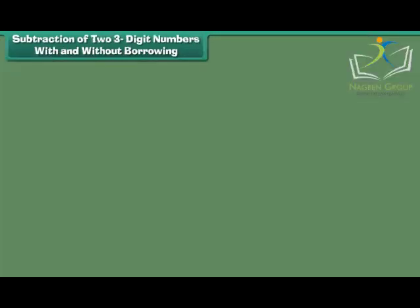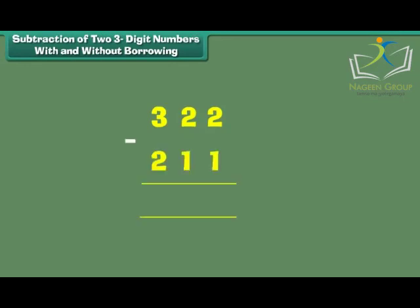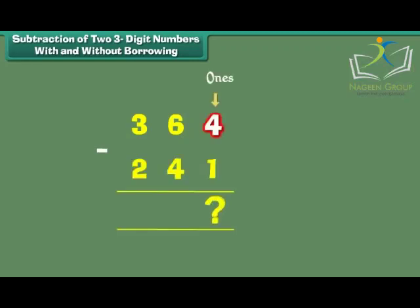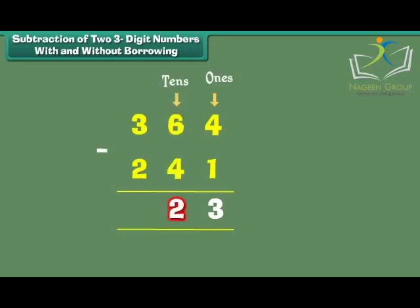Subtraction of two 3-digit numbers with and without borrowing. Let us now perform subtraction on 3-digit numbers. What is 364 minus 241? 4 minus 1 is equal to 3. 6 minus 4 is equal to 2. 3 minus 2 is equal to 1. Therefore, 364 minus 241 is equal to 123.